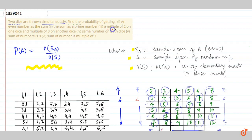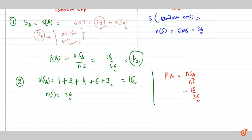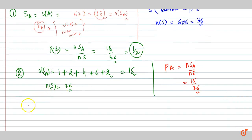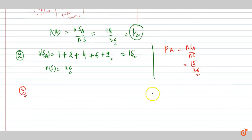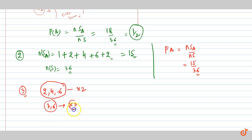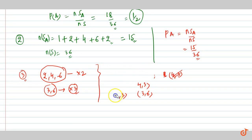Moving on to the third part which says a multiple of 2 on one dice and a multiple of 3 on another dice. We have to reduce the matrix such that there are 2, 4, 6 which are multiples of 2, and 3 and 6 which are multiples of 3. So now we have to find out all the possible outcomes which will satisfy this event.